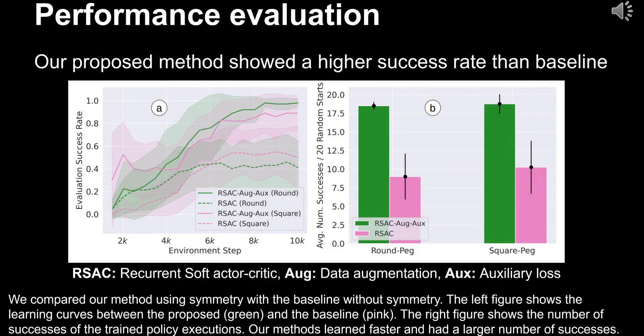We compared our method using symmetry with the baseline without symmetry. The left figure shows the learning curves between the proposed method (green) and the baseline (pink). The right figure shows the number of successes of the trained policy executions.